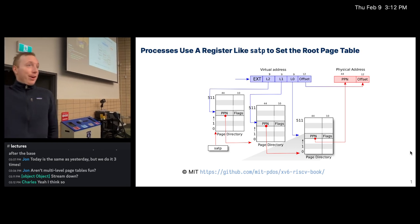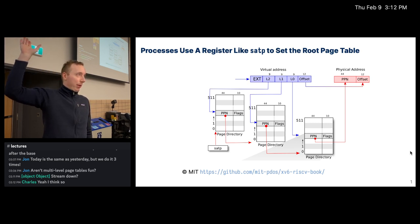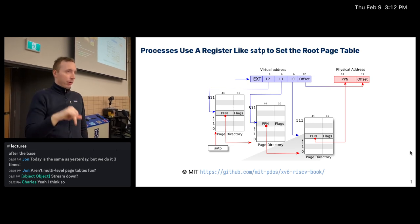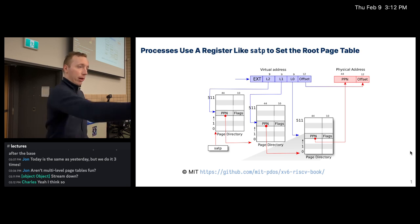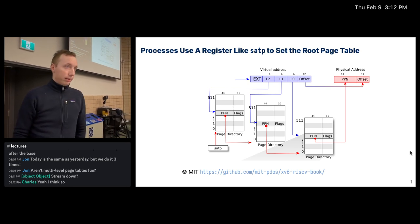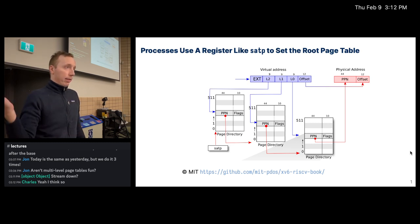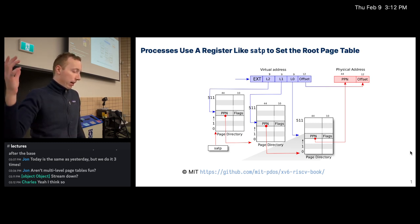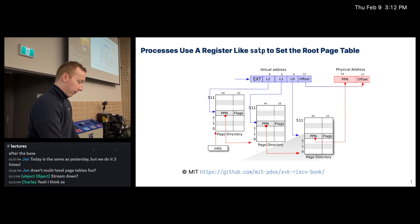So we're back. Our SATP pointer pointed us to the highest level page table — in this case, where L2 is. That's all the information we need to actually translate a virtual address. We just keep following them until we eventually get to L0, and then that's exactly how we treat a single large page table that has the translation in it. We just substitute in the physical page number for the virtual page number, keep our offsets the same, and we're all good.